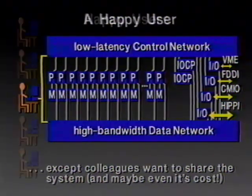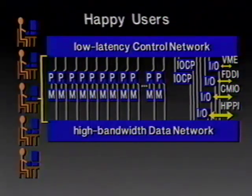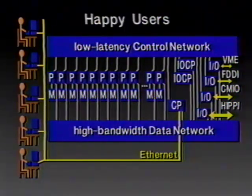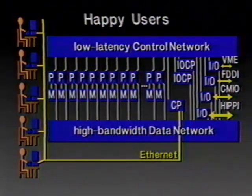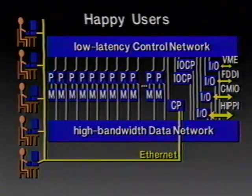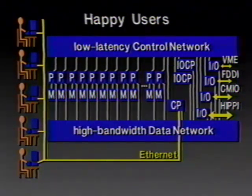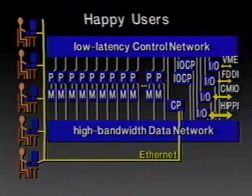So the way we're going to fix that is to provide a way to attach more users to the system. What we're going to do is move the workstation that's controlling all the processors into the middle of the system and hang Ethernet off of it. That allows the user to use the system plus all the colleagues. Now we've got a bunch of people connected by Ethernet into this control processor, and we have a lot of happy users — not just one.